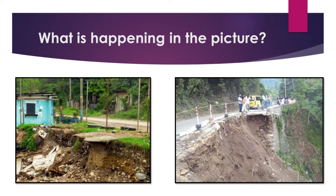In the other picture, you can see a roadway that has been affected by soil erosion. When we have those sorts of situations, persons are unable to move from one location to another. This shows that soil erosion is something that affects us both in the short term and in the long term.